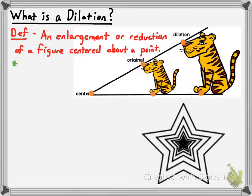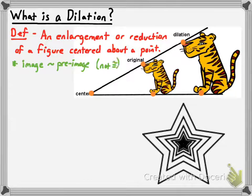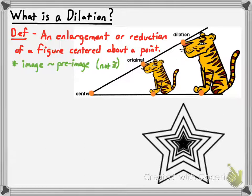Whenever you have a dilation, you can always say that the image is similar to the pre-image — they're not congruent to one another, but they are proportional to one another. And since the images are similar to one another, you can say there's a scale factor for comparing the dimensions of the image with the dimensions of the pre-image.